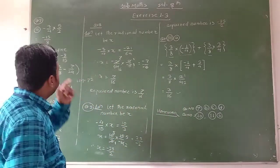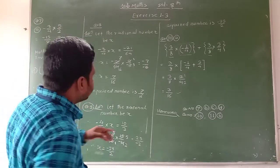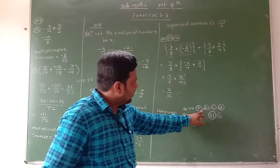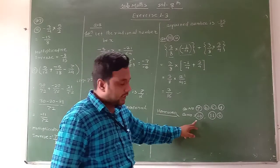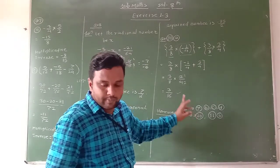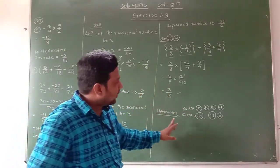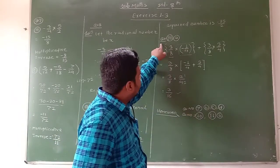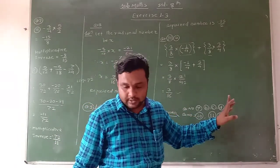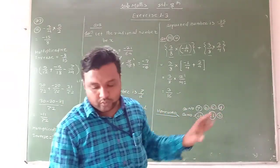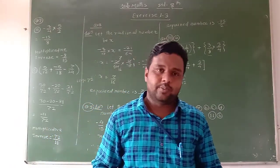Now note down your homework. From question number 7: B, C, and D. This is the homework. Also question number 10 — a word problem like question number 8. And question number 11, B. This is the homework for you. This is all for today, students. Thank you very much.